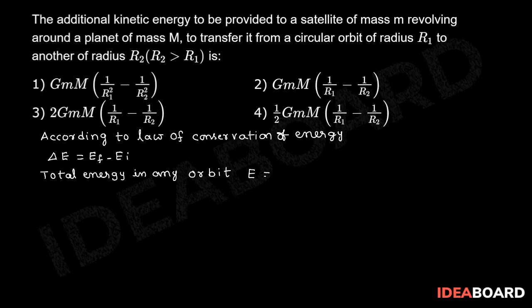E is equal to minus GMm by 2R. So, initial energy is equal to minus GMm by 2R1.